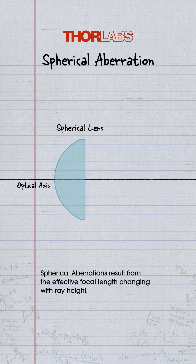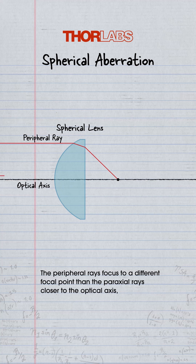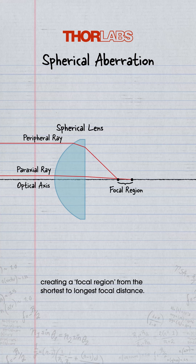Spherical aberrations result from the effective focal length changing with ray height. The peripheral rays focus to a different focal point than the paraxial rays closer to the optical axis, creating a focal region from the shortest to longest focal distance.